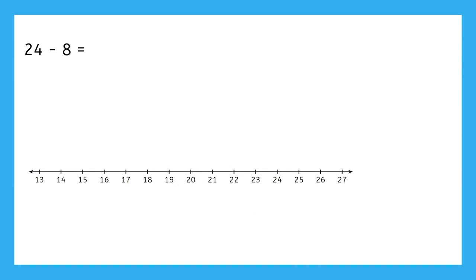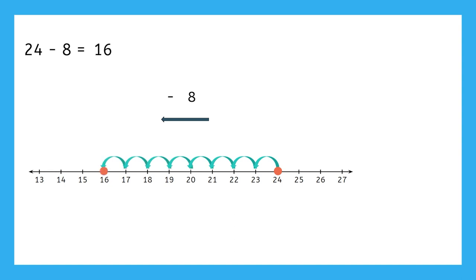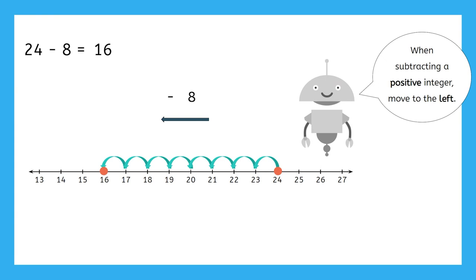Great work. Let's review subtraction now. In the last video, we solved 24 minus 8 with base 10 blocks, so let's try it now with the number line. Again, we start at 24 on our number line. We know that numbers get smaller as we move to the left on the number line, and subtracting two positive integers gives us a smaller value. So subtracting positive 8 means we should move 8 units to the left, landing us at our answer 16. Notice that when we subtract a positive integer, we move to the left on the number line.